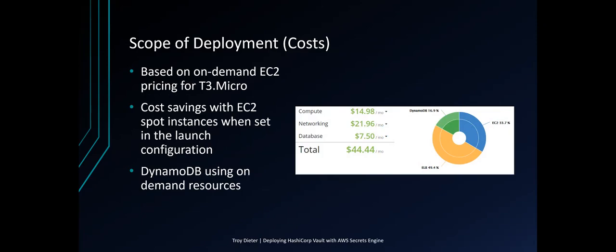As far as pricing, we're based on on-demand EC2 pricing for T3 Micro, coming out to about $44 a month. There will be cost savings with EC2 spot instances when the spot instances option is set in the launch configuration. DynamoDB will be using on-demand resources and not provisioned.